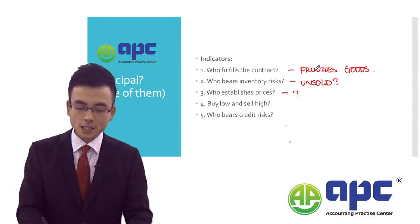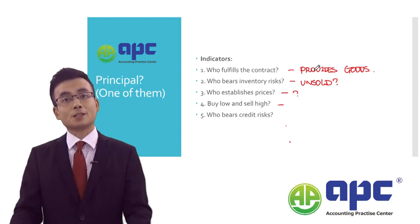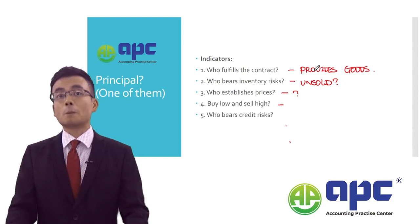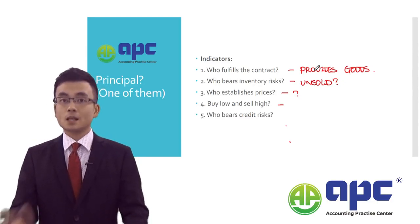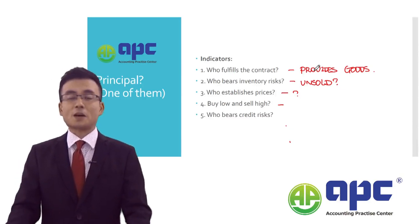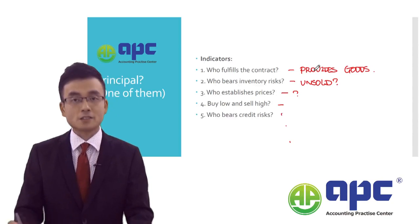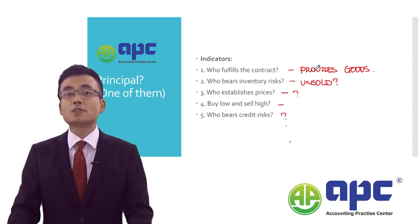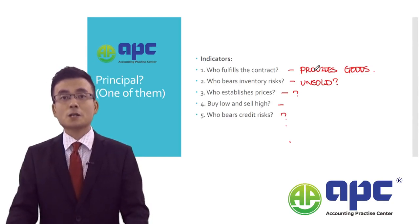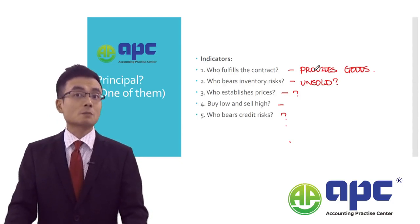Fourth, if a party buys at a very low price and sells it at a higher price, enjoying the profit from it instead of receiving commission from another party, the first party will certainly be the principal. Finally, fifth, who bears the credit risk? That means if the money cannot be collected from the final customer, who bears the losses? The party that bears the losses will certainly be the principal.